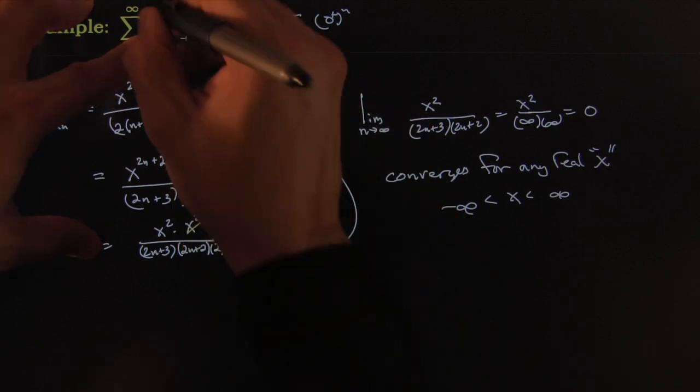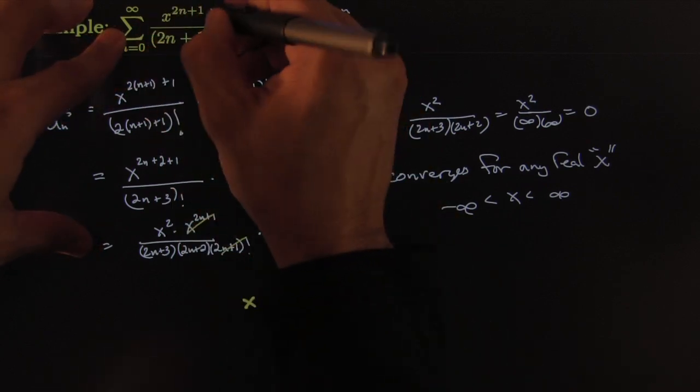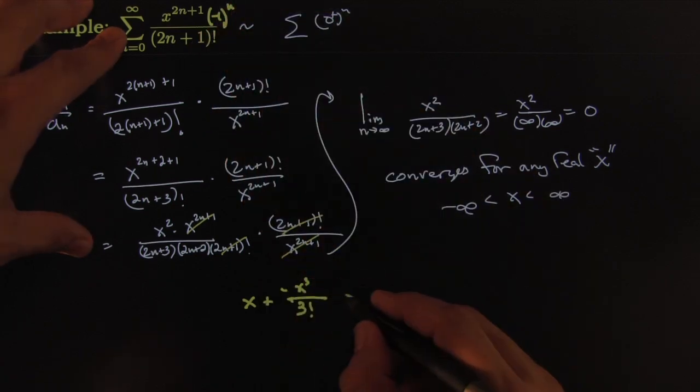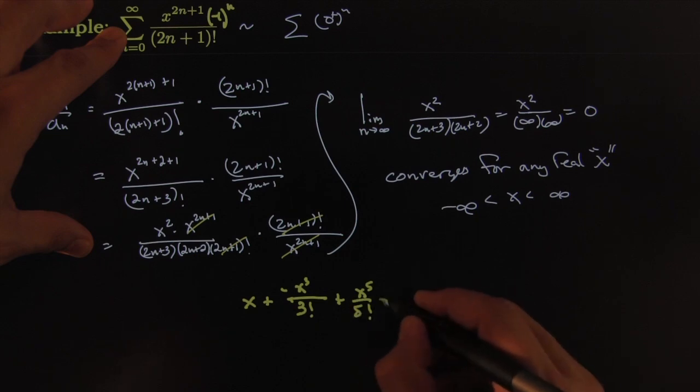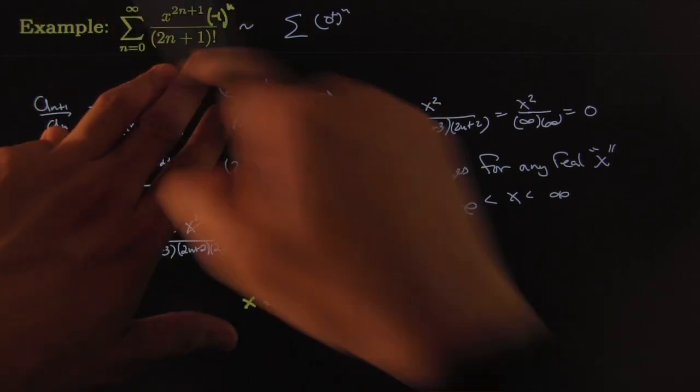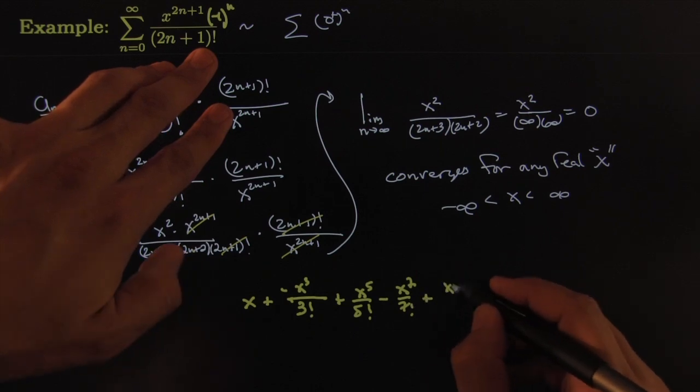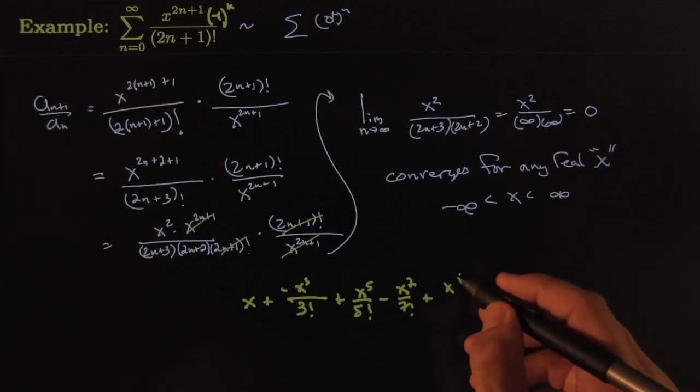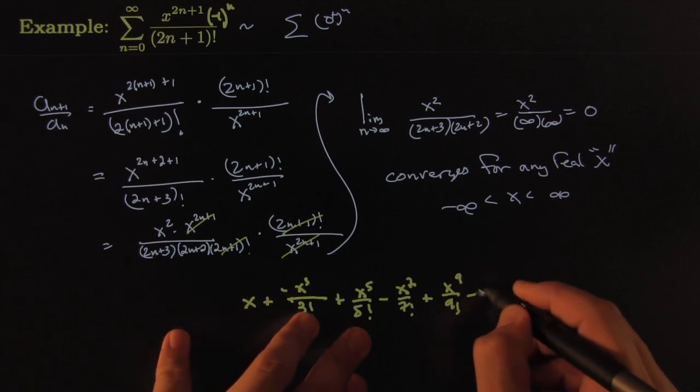Right, now suppose we were to add something a little bit more here and add a negative 1 to the end. So that would give you a negative. That next one will be plus x to the 5 over 5 factorial minus x to the 7 over 7 factorial. So I'm doing a slightly different version of the example, but it could be why? Because it's super famous.